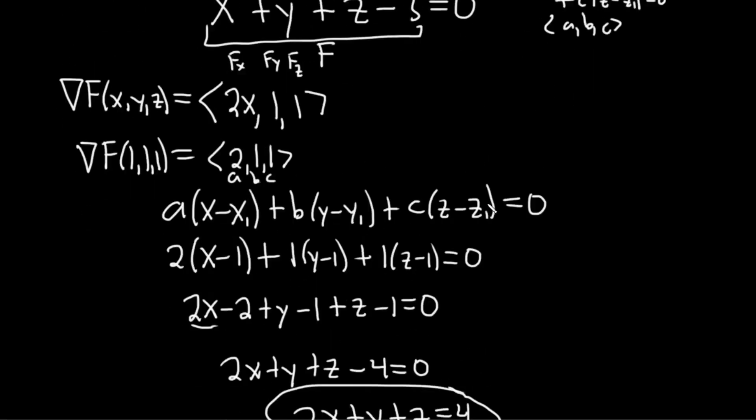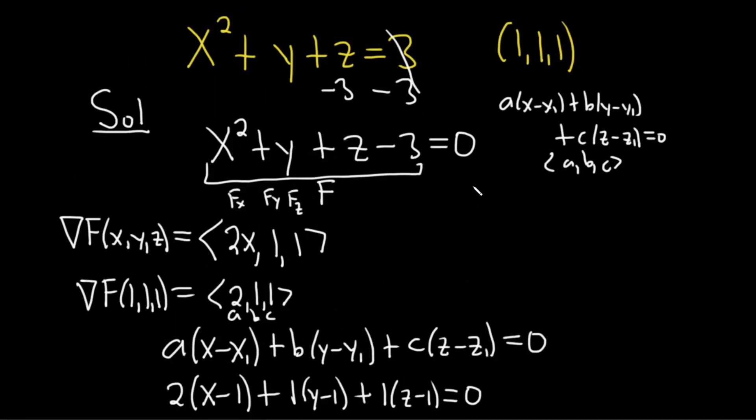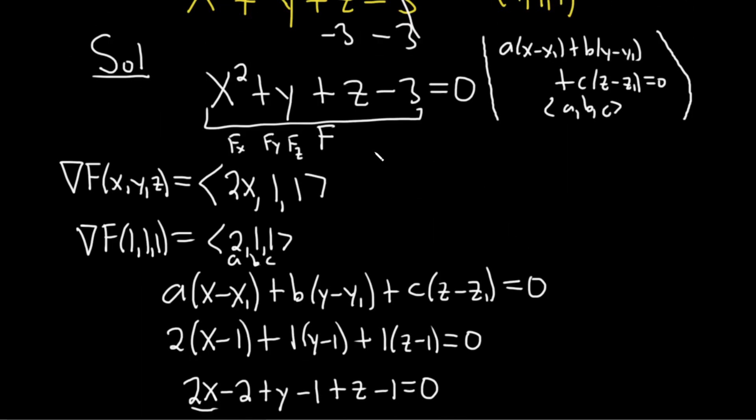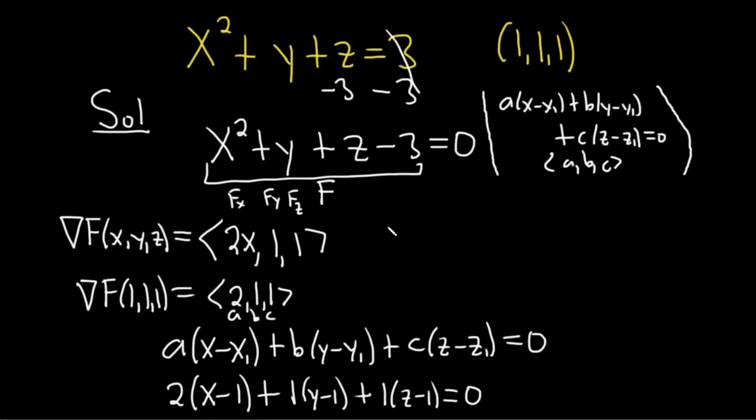So there's different ways of thinking about it. Different books explain it differently. I like to think about it as just the equation of a plane, right? And then your normal vector is going to be your gradient. And you're good to go. The catch is you do have to set it equal to 0 first.